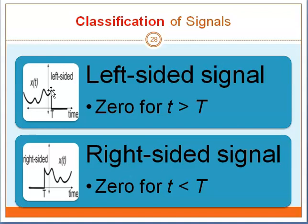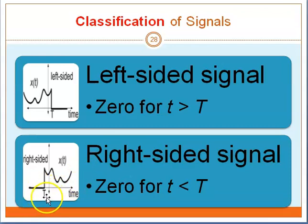A right-sided signal is when your signal is on the right-hand side, given that your T is at a specific point. So when your T is less than the period given to you, that will be 0.